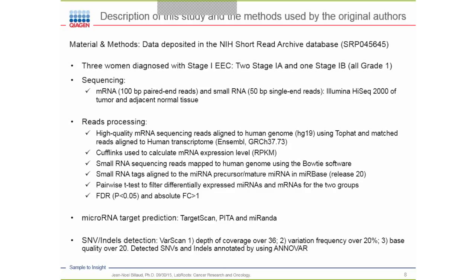Sequencing was done on mRNA as well as small RNA using Illumina HiSeq sequencing of tumor and adjacent non-tumor tissue. High-quality mRNA sequencing reads were mapped to genome hg19 using TopHat, and aligned to the transcriptome Ensembl GRCh37. Cufflinks was used to calculate mRNA expression levels. For small RNA sequencing reads, they were mapped to the genome using Bowtie, and small RNA tags aligned to microRNA precursor mature microRNA in miRBase using release 21.